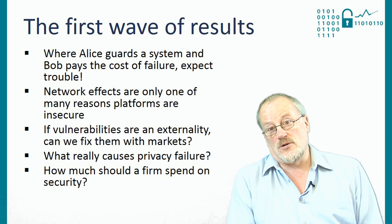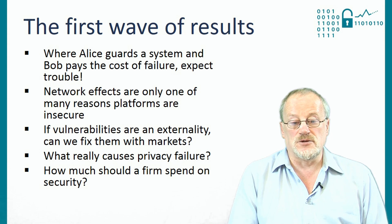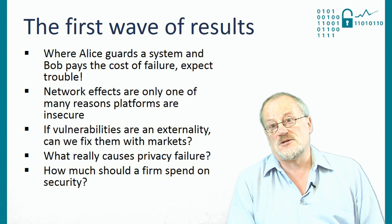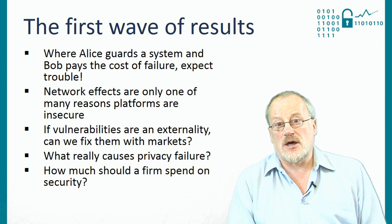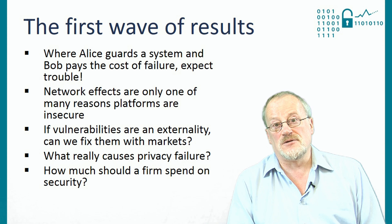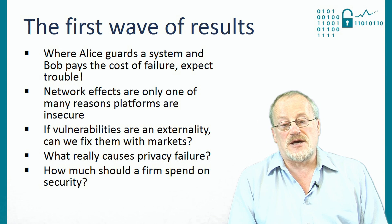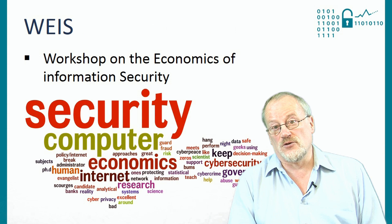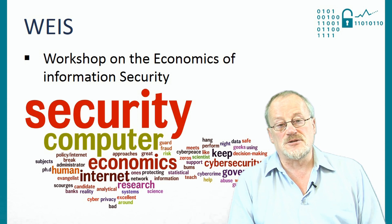You then have to start thinking about what you can do about the problem. If vulnerabilities are an externality — a side effect of transactions like environmental pollution — perhaps we can fix them with markets, just like you have cap-and-trade markets for CO2. What really causes privacy failure? How much should a firm spend on security? Should the security budget be 1% of the IT budget, or 10%, or what? This led to two things: the foundation of vulnerability markets — iDefense and Tipping Point were set up at the time — and the first workshop on the economics of information security, both of which happened in 2002.